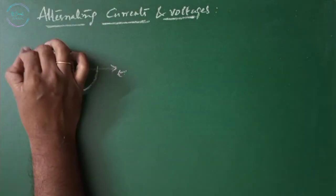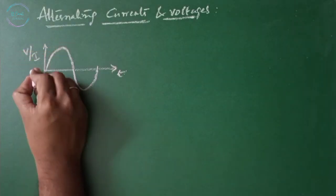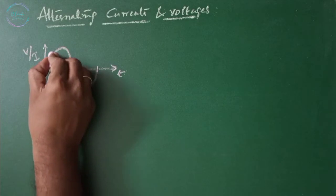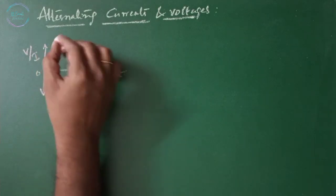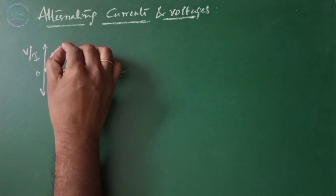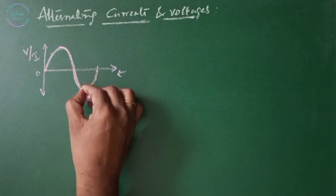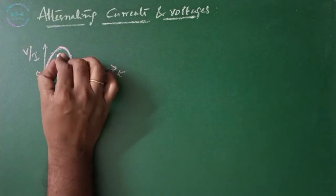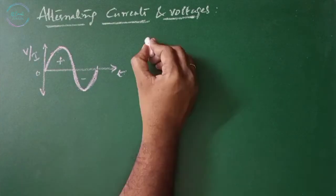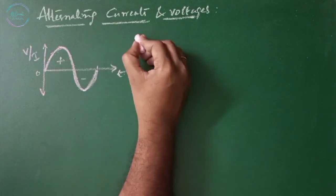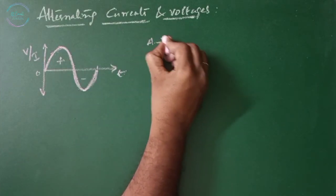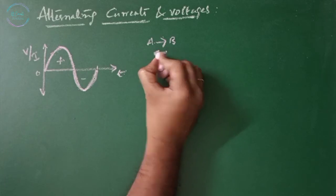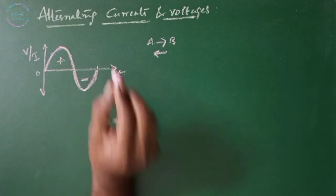On the time-voltage or current axis, at t equals zero the voltage starts increasing to the maximum positive value and then starts decreasing to the negative maximum and back to zero. This is the positive value and the negative value. If the direction of current is from A to B in the positive half cycle and B to A in the negative cycle.